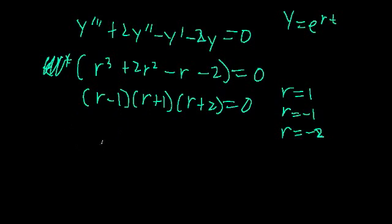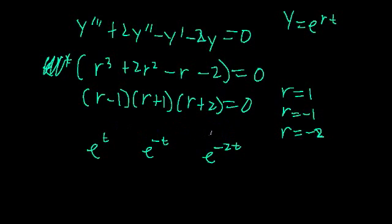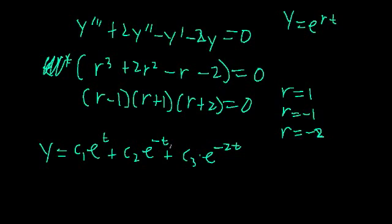Our three solutions are e to the t, e to the negative t, and e to the negative 2t. Since they all have different exponents, we assume they are linearly independent. The general solution is therefore y equals c₁·e^t plus c₂·e^(-t) plus c₃·e^(-2t).